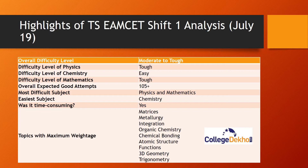Going to the highlights of the analysis: the overall difficulty level was moderate to tough — it was above average in terms of difficulty. Physics and Mathematics were difficult, while Chemistry was easy. The expected number of good attempts was 105 plus, and the paper was time-consuming.